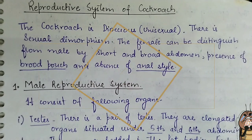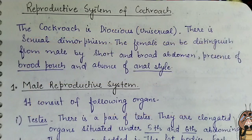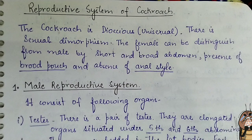In this video we are going to study about the reproductive system of cockroach. The cockroach is dioecious, meaning it is a unisexual animal, and there is sexual dimorphism, which means that we can differentiate the male and female cockroach.